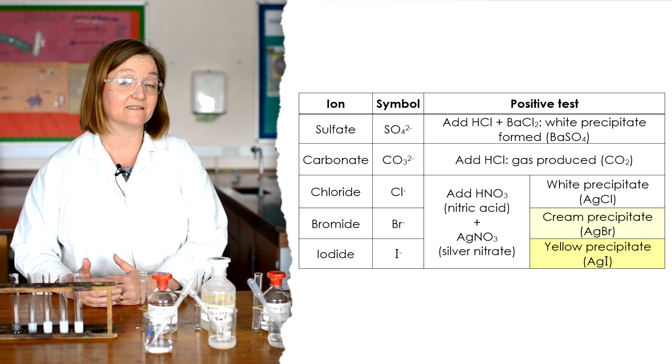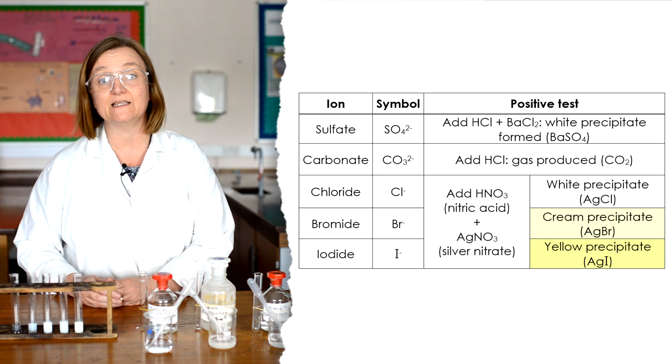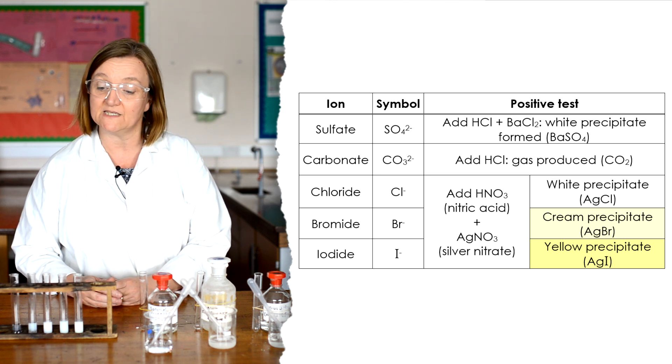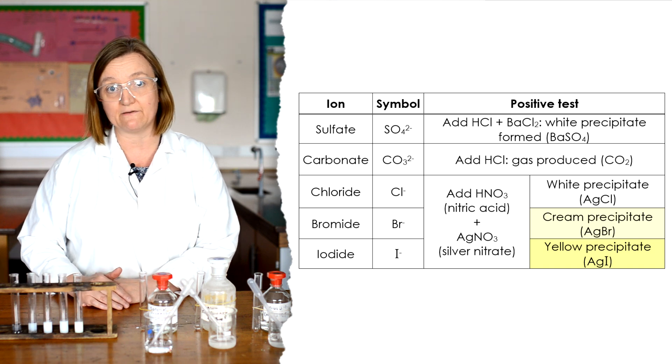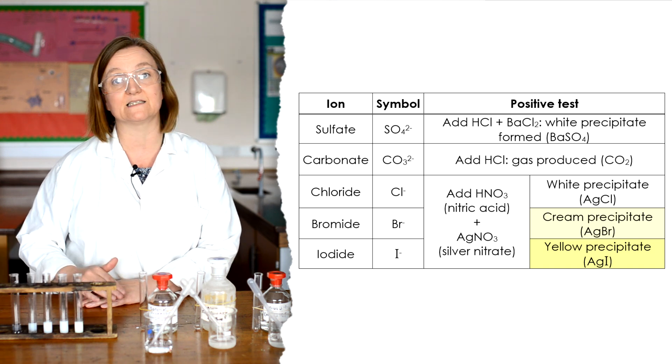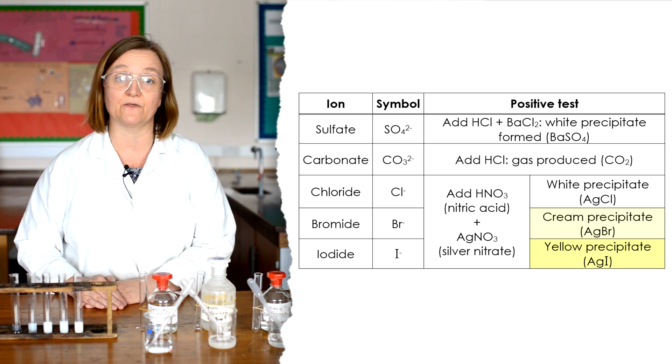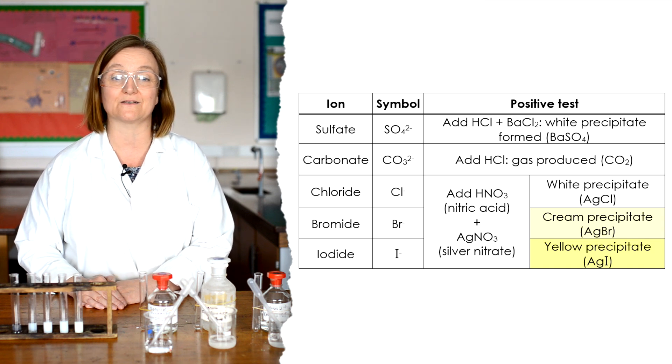Now, if we had an unknown solution, we could now use a combination of flame tests and the tests with hydrochloric acid, barium chloride, nitric acid, and silver nitrate to identify both the metal and the non-metal parts of the compound.